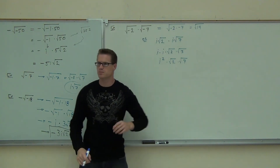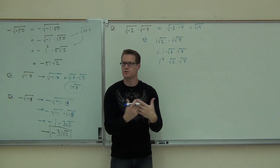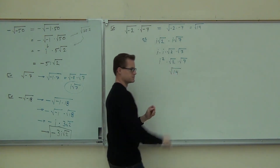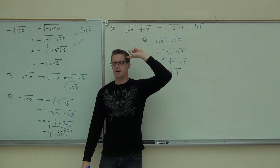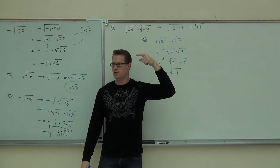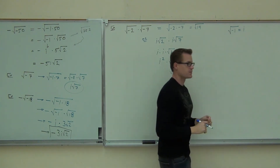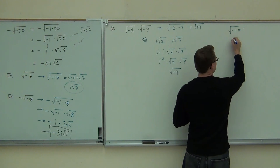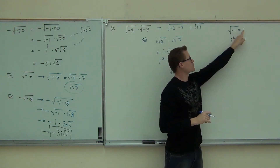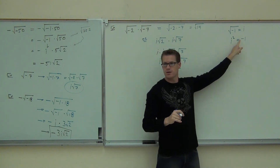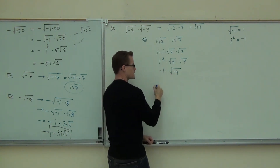Okay, this is the weird part. Root 2 times root 7 — you know you can put those together because they're square roots with positive numbers inside. You know this is going to be the square root of 14. How much is i squared? Negative 1. There are two things that need to be tattooed on your brain: the first is that the square root of negative 1 equals i. The second is just as important: i squared equals negative 1. You have to memorize that. Every time you see i squared, you write negative 1.